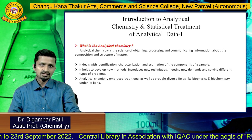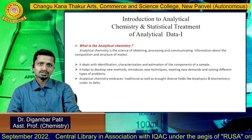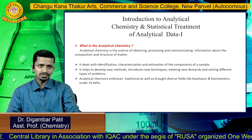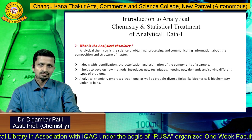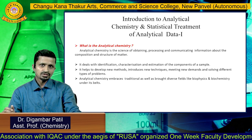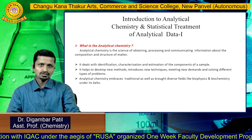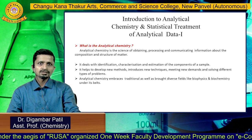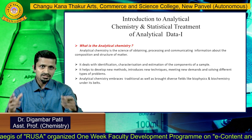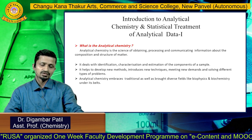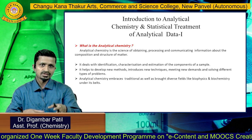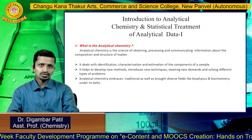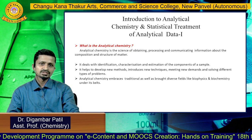In the last lecture we learned what is analytical chemistry. Analytical chemistry is the science of obtaining, processing, and communicating information about the structure and composition of matter. It deals with the characterization, identification, and estimation of various components of a sample. It is not limited to chemistry but also covers other branches like biophysics and biochemistry.